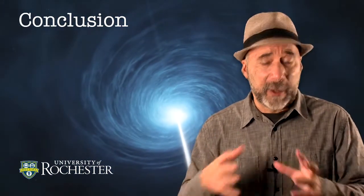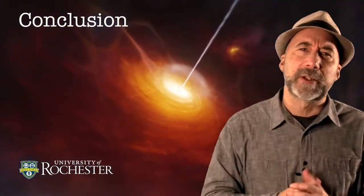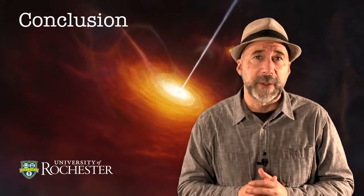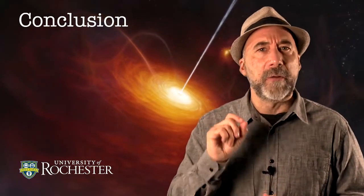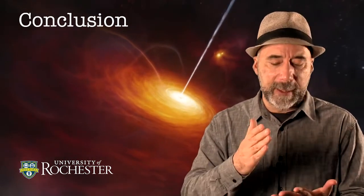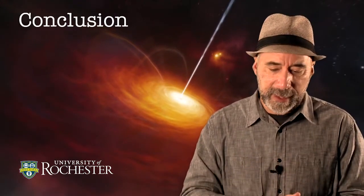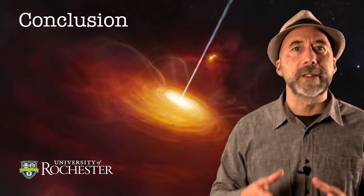The small size scale of these things also tells us something important. One way we can tell that the regions where these jets are coming from must be very small is the variability — the fact that the variation is sometimes so fast that it must be associated with a small object. Put that together: we need something very small, and we need it to boost things up to relativistic speeds. And that leads us to the idea that it's supermassive black holes at the center of these galaxies.